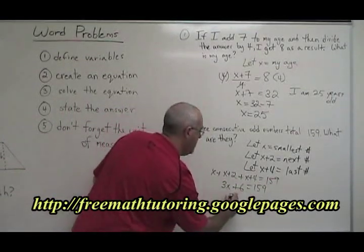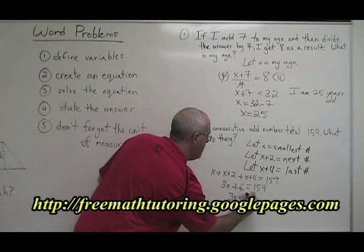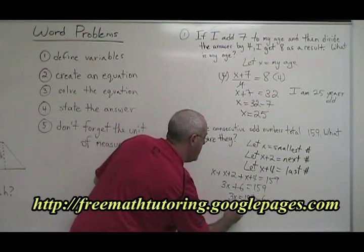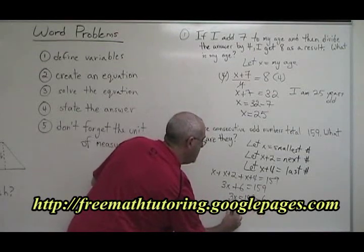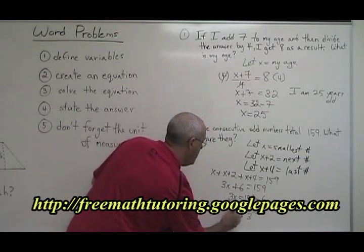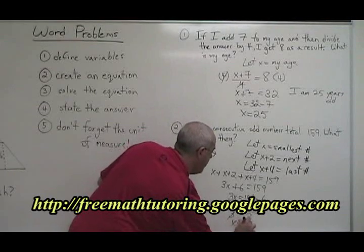Move the 6 to the other side. 3x equals 159 minus 6, which is equal to 153. Divide both sides by 3. And x equals 51.